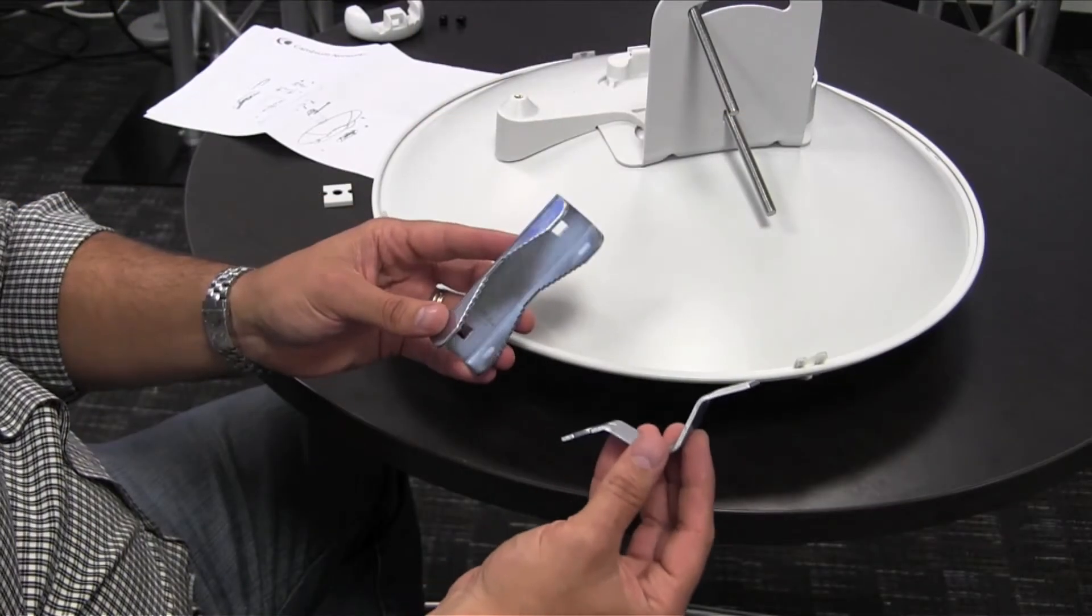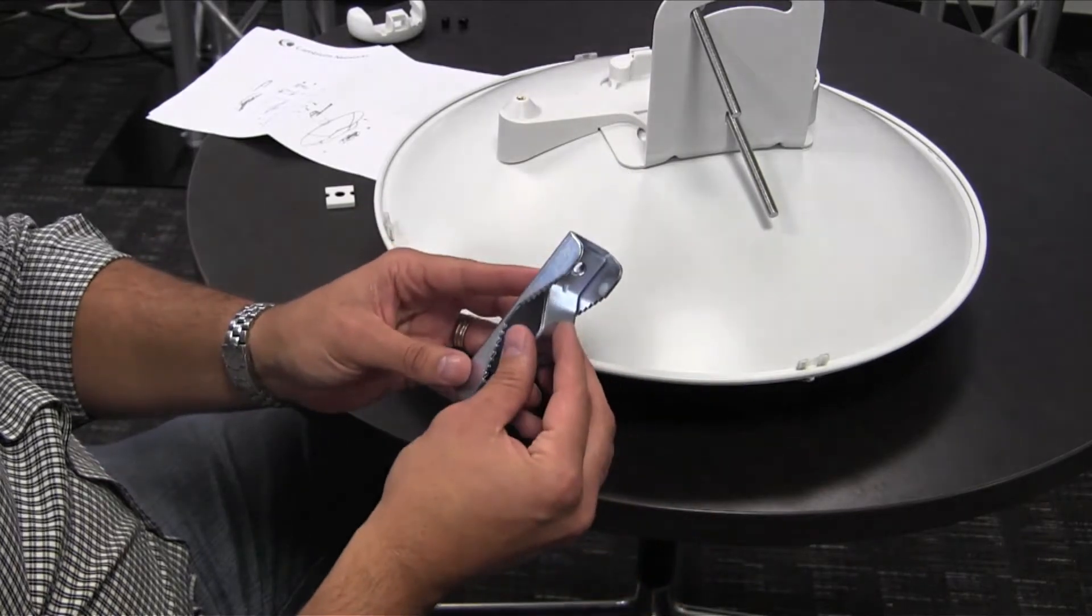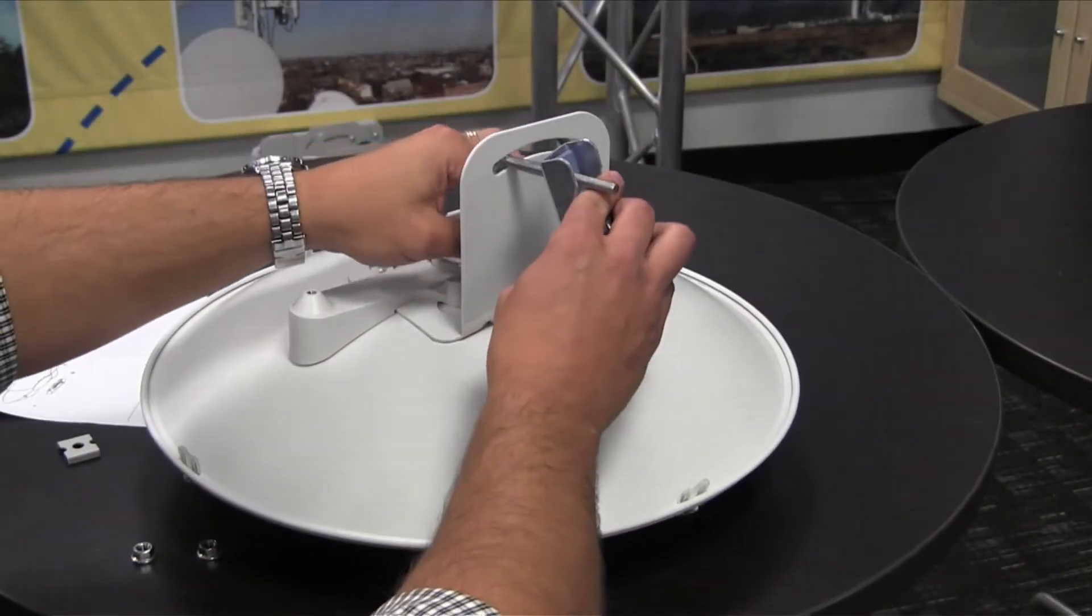Insert the pole bracket clamp into the pole bracket mount. Attach the pole bracket assembly to the mounting hardware.